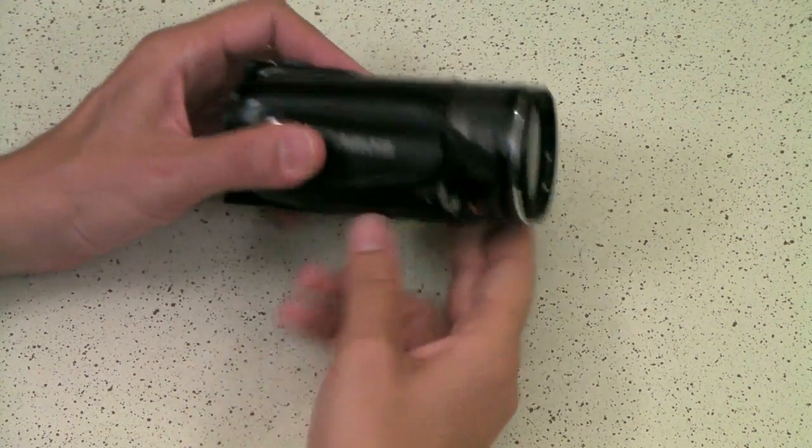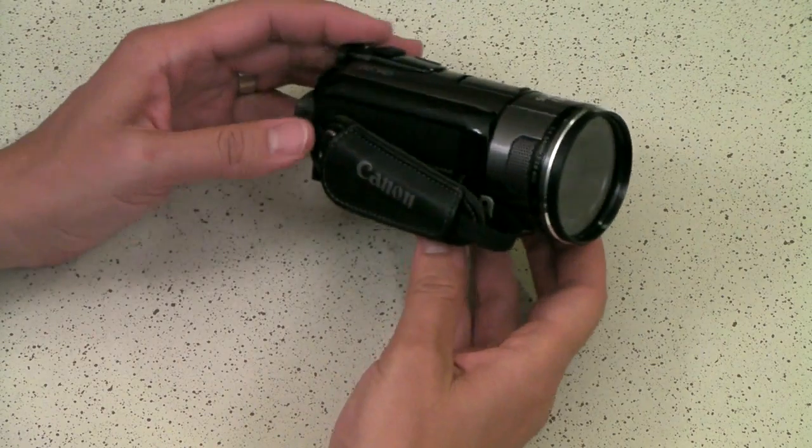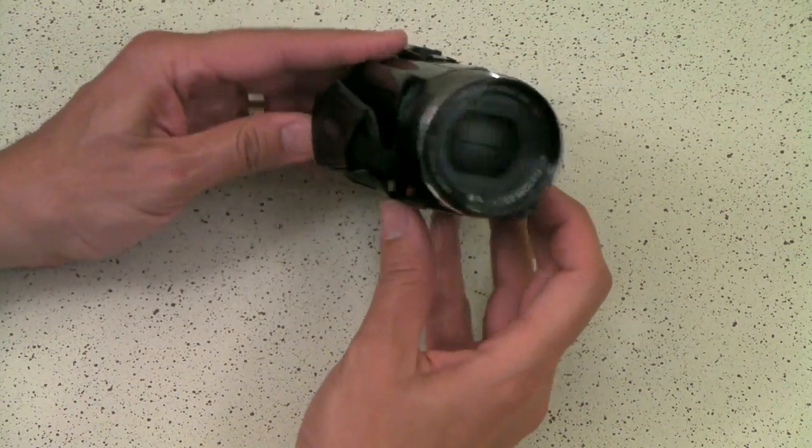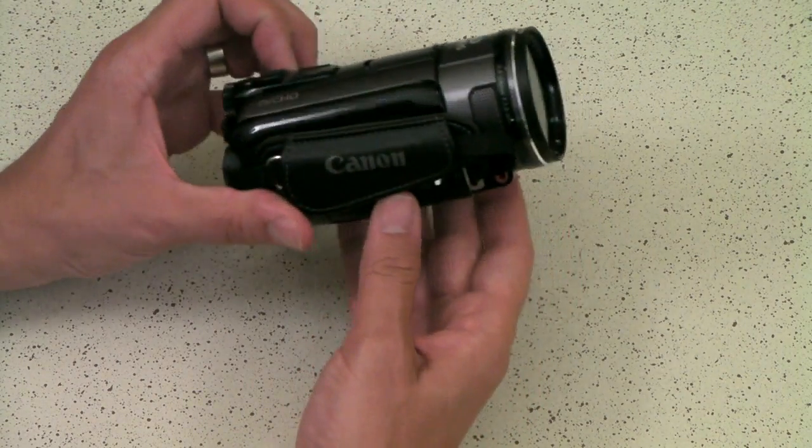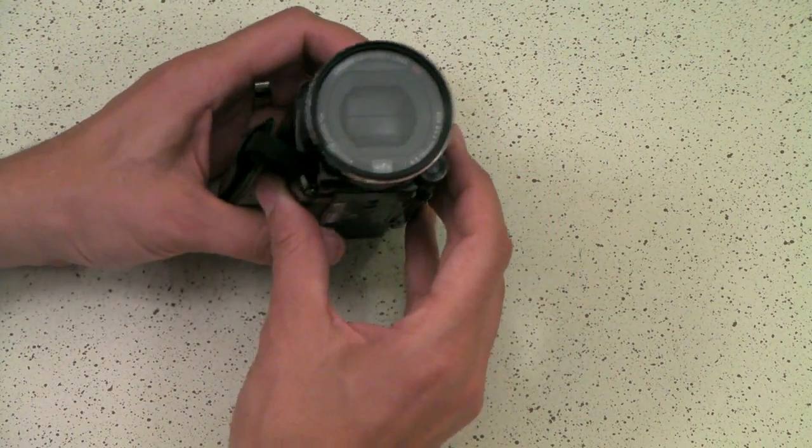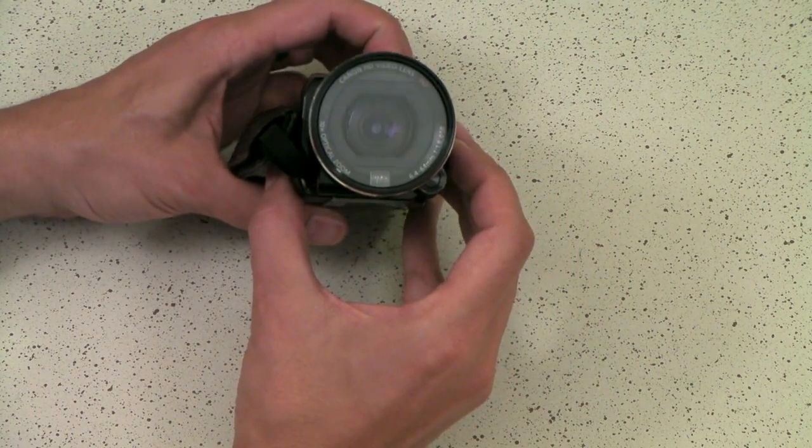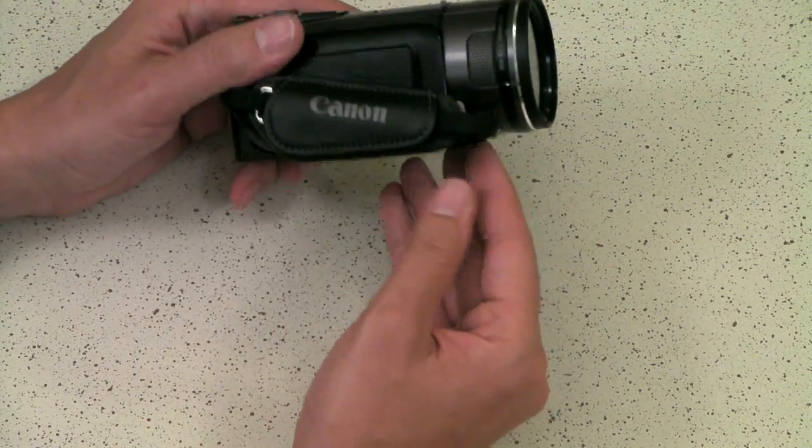And finally today, I want to talk about my camera here. This is my A camera, my Canon Vixia HFS100 that I use for most things. I'm using it for this right now, using my B camera. But if you notice, like a lot of cameras nowadays, like camcorders anyway, they have built-in lens caps. You can see this is an automatic lens cap that opens and closes when I power up.